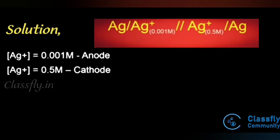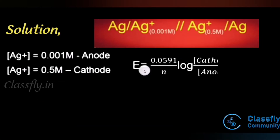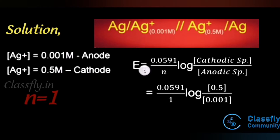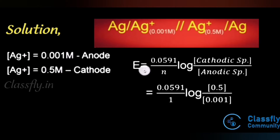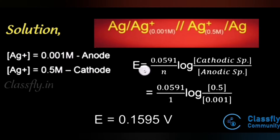We know that E_cell = (0.0591 / n) × log([cathode species] / [anode species]). With n = 1: E_cell = 0.0591 × log(0.5 / 0.001). Calculating this value gives E_cell = 0.1595 V.